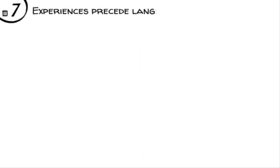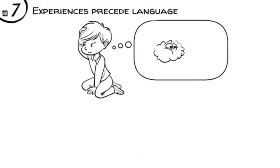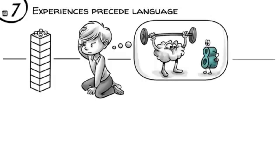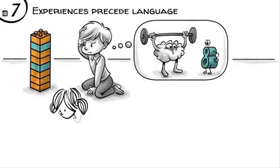Experience precedes language. As we demonstrated, it takes a child a lot of mental training and hands-on experiences to form the concept of a number. At the age of five, we can build a simple row of eight.